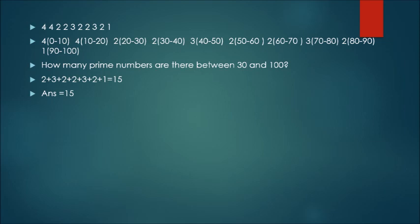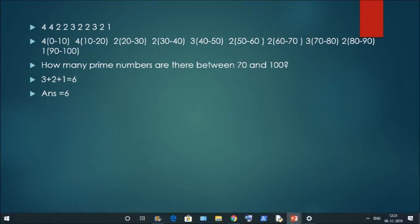Let us solve a question: how many prime numbers are there between 30 and 100? From 30 to 40 there are 2 prime numbers; 40 to 50 there are 3; 50 to 60 there are 2; 60 to 70 there are 2; 70 to 80 there are 3; 80 to 90 there are 2; and 90 to 100 there is 1. Adding all these gives the result as 15.